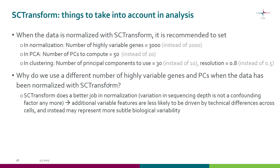So why do we use these higher numbers when the data has been normalized with SC-transform? Because SC-transform does a better job in normalization, so the variation in sequencing depth is not a confounding factor anymore. Then additional variable features are less likely to be driven by technical differences across cells and may instead represent more subtle biological variability. SC-transform is particularly well suited for situations when you are looking for cell types which have only very small differences between themselves and you need to separate them.